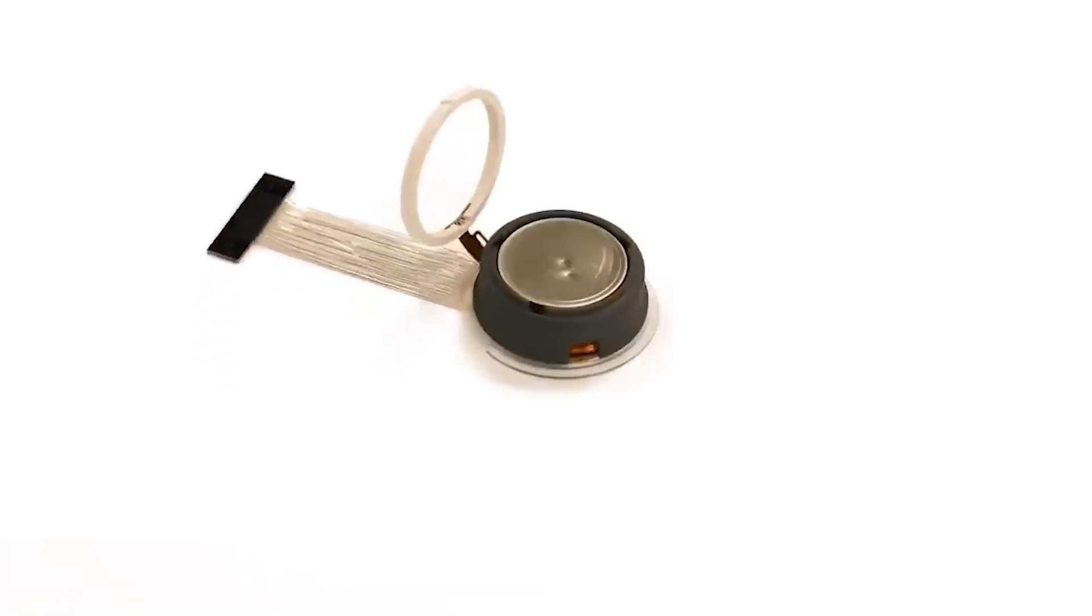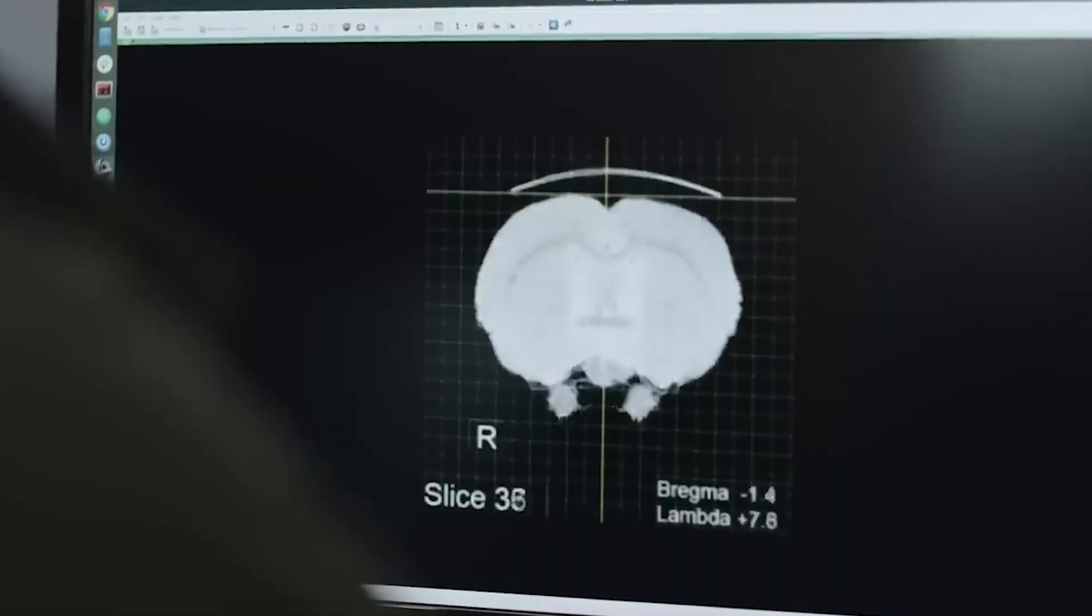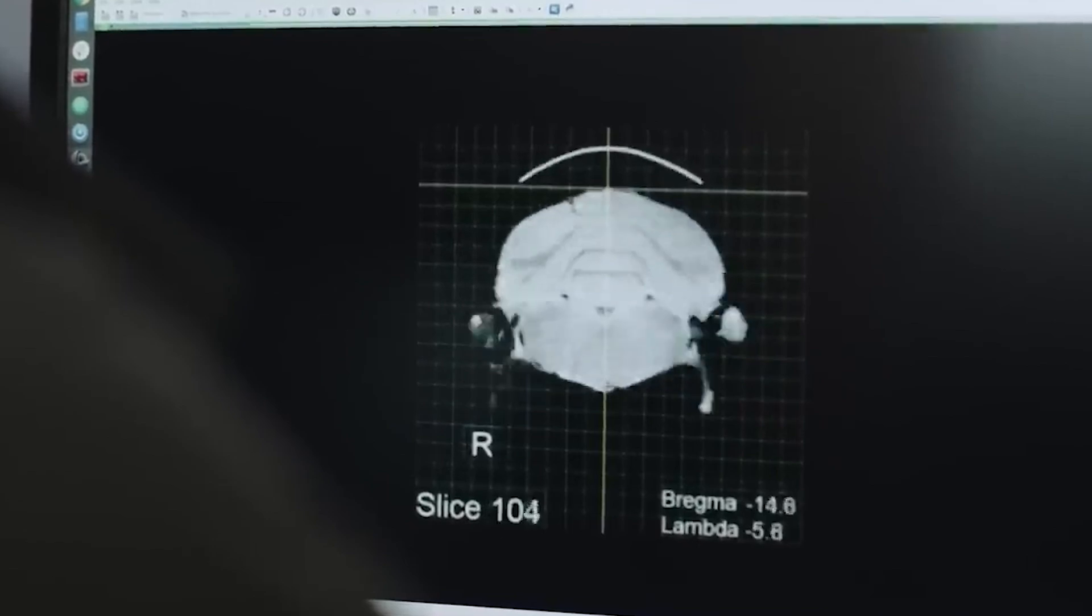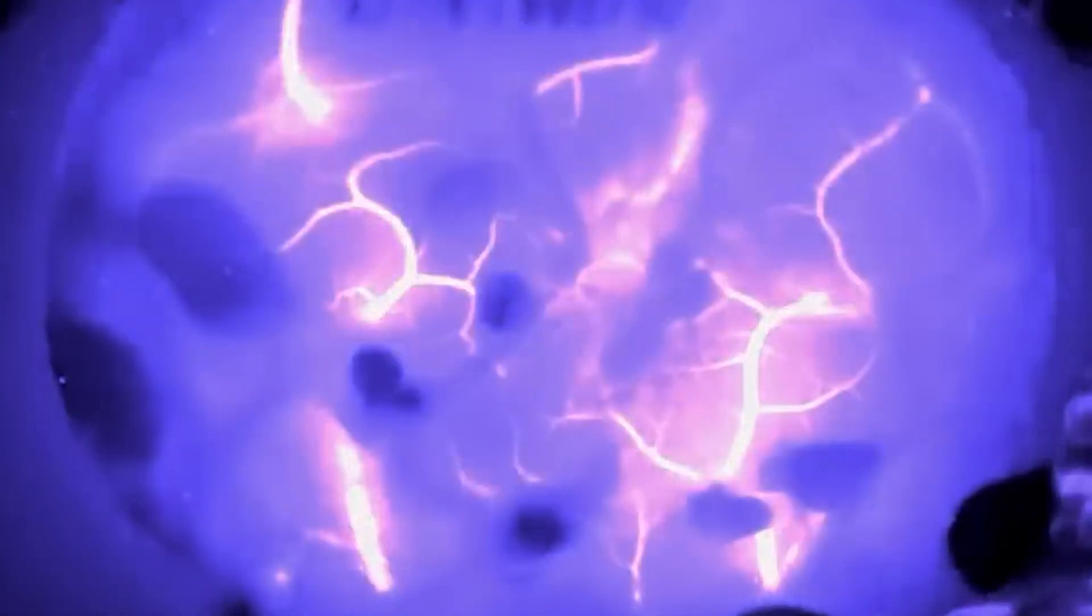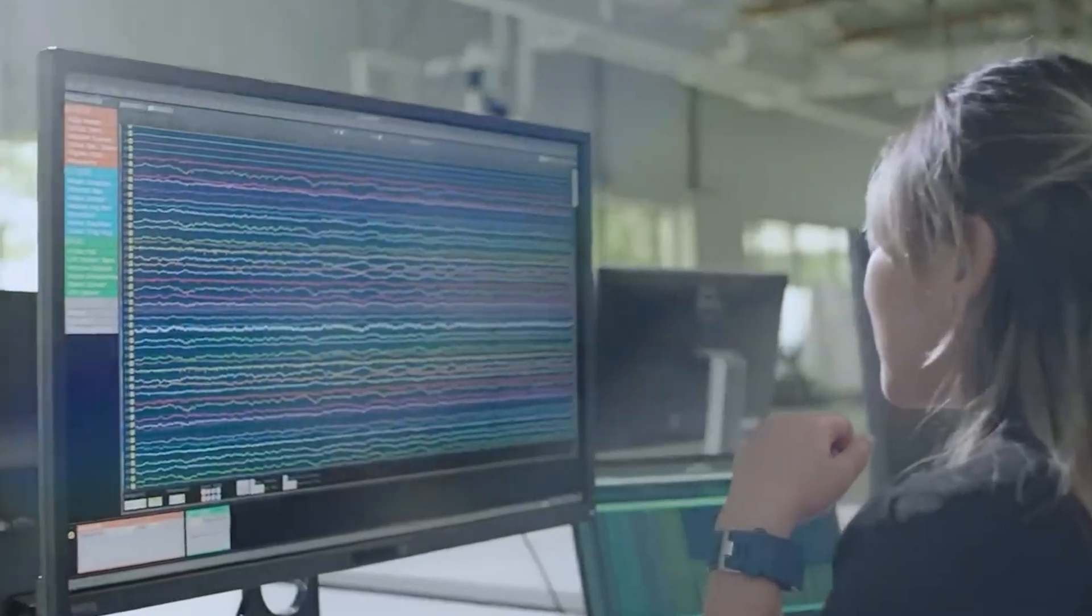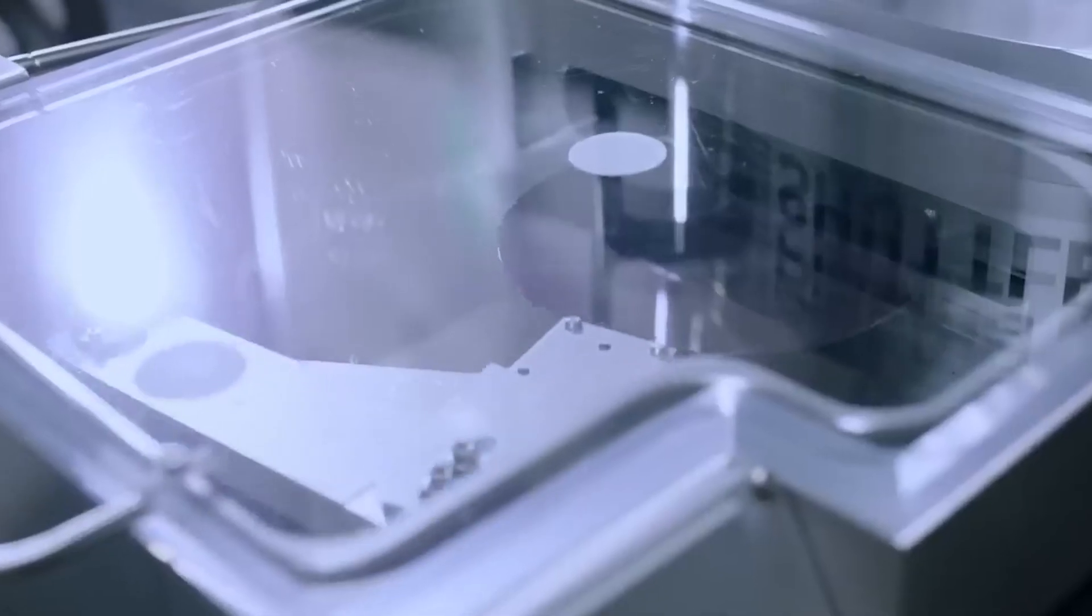Neuralink chips are here to revolutionize how we harness the power of our minds. These tiny marvels, initially designed for medical assistance, promise to regulate hormones, transmit music beyond human hearing, and enable telepathic-like communication. Imagine accessing data from your brain via Bluetooth, seamlessly merging the digital and organic worlds.